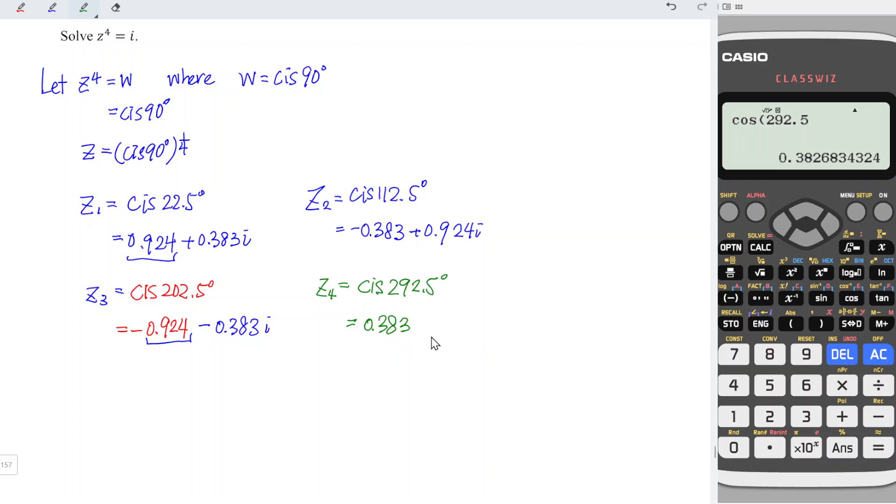Sine in the fourth quadrant definitely is negative. So we put negative 0.924. However, of course, if we are not sure, we can press and check. So sine 292.5, as we can see, we will definitely obtain the correct value. And hence with that.